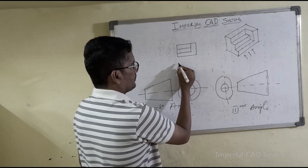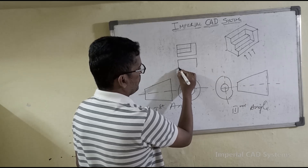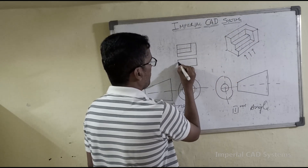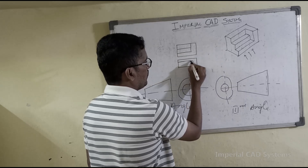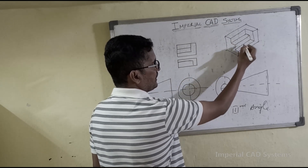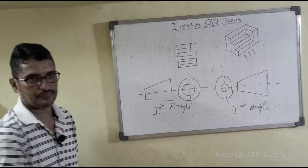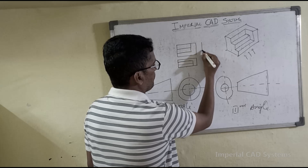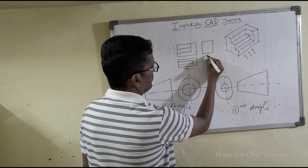For the top view, when you view from the top — in first angle of projection, the top view is placed below. You can see this edge, and this edge coincides with that edge, so we show a single edge. This edge and this edge coincide as a single edge, shown like this. Then for the left side view, the left side view is placed to the right. Make a closed boundary. This is the top view and this is the left side view.